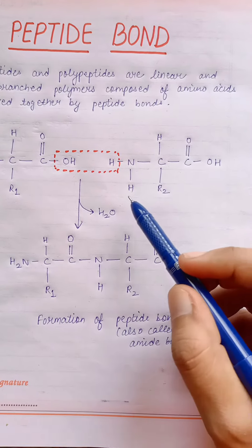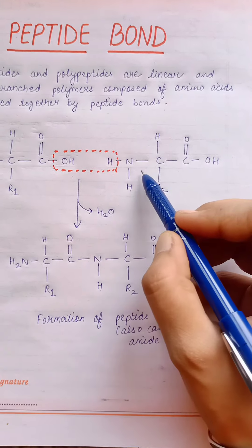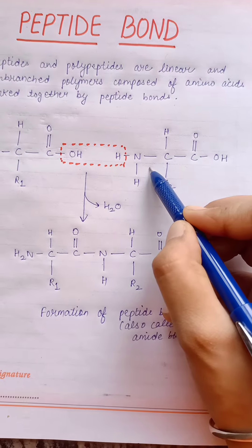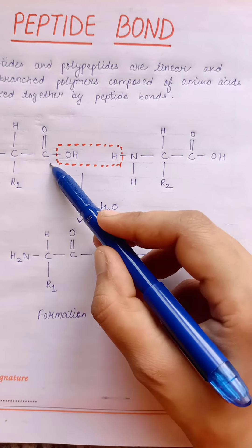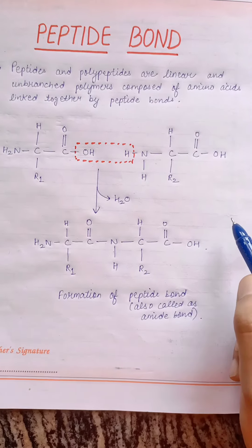And these peptide bonds are formed between the alpha amino group of one amino acid and alpha carboxylic group of second amino acid.